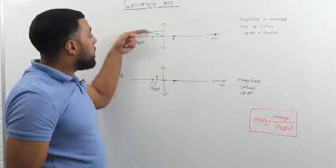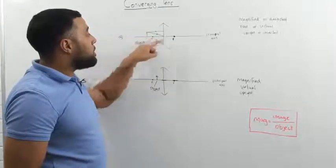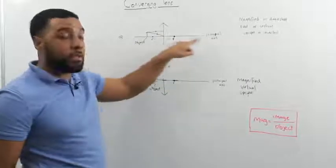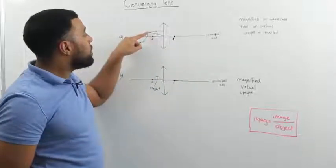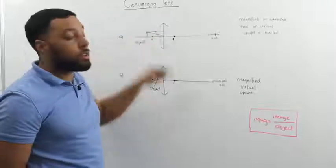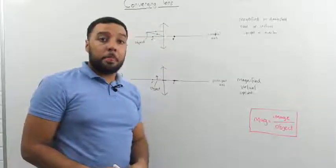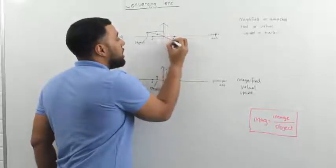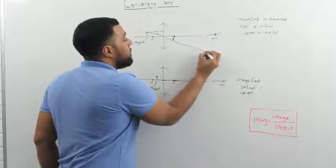We draw one that's going parallel to this principal axis. That's the line that goes through the center of the lens. And we draw another ray of light that goes through the center of the lens. Well, the ray of light that goes through the center of the lens doesn't refract.